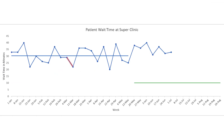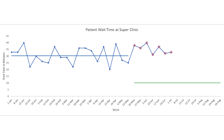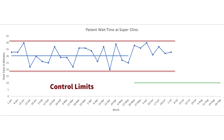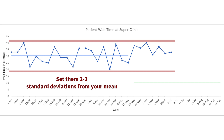SPC teaches us that there are indicators we can watch for to tell us when to respond to the voice of the process. The normal up-and-down variation all processes have is called common cause variation, sometimes referred to as normal or random variation. The out-of-the-ordinary variation — like seven points on one side of the central line or mean — is called special cause variation. Control limits are calculated boundary lines we add to our run charts. They are calculated differently depending on data type — an easy way is to set them two to three standard deviations from your mean.